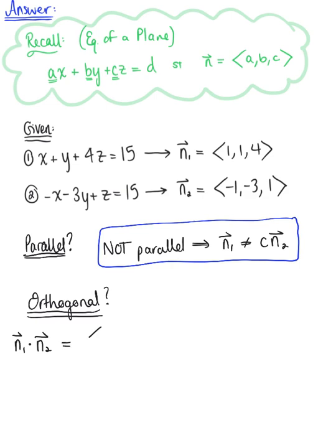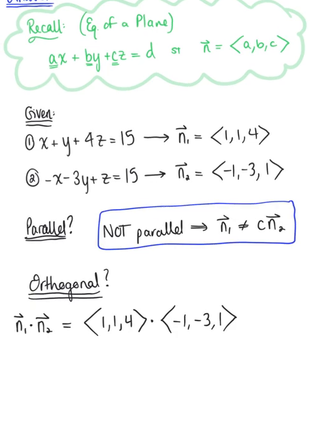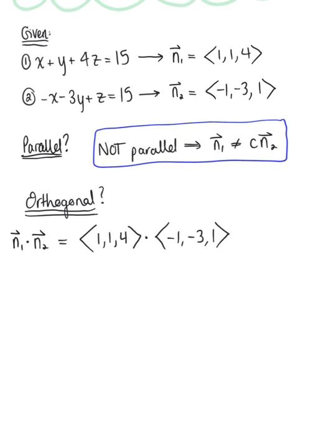So plugging this in, we have the first normal vector defined as 1, 1, 4, and we dot this with the second normal vector, minus 1, minus 3, positive 1. And so performing the dot product, we have 1 times negative 1 gives us minus 1, plus we have 1 times minus 3, which is negative 3. So obviously, negative times positive is going to leave us with a minus. And then this is plus, we have 4 times 1, which is 4.